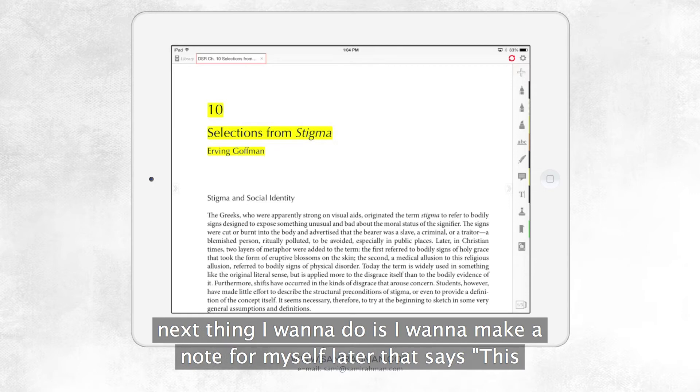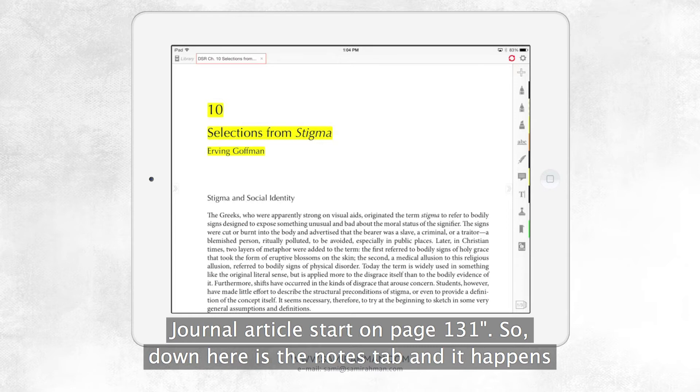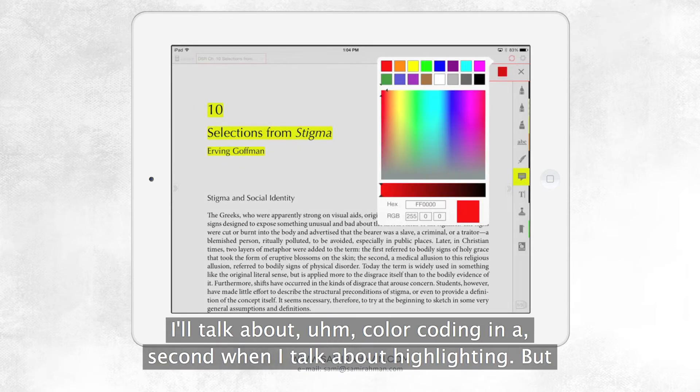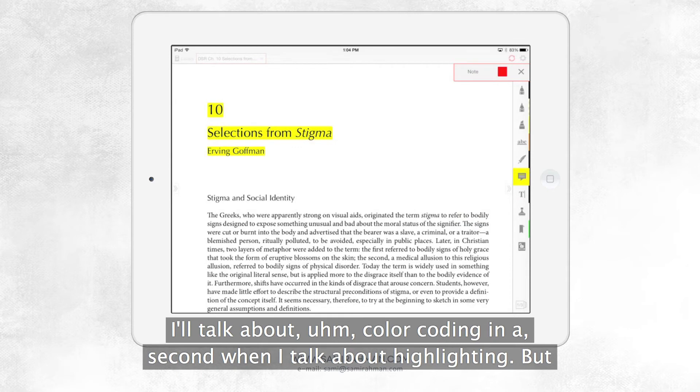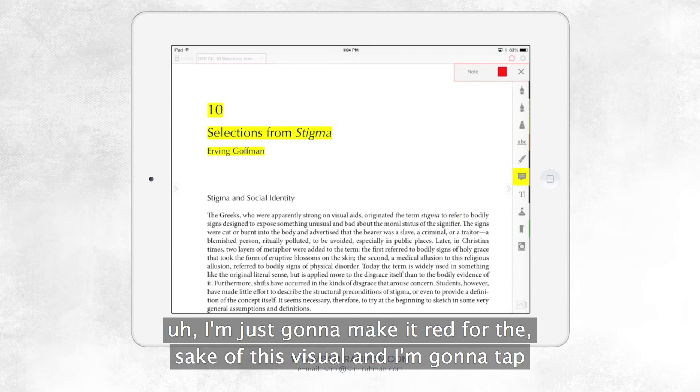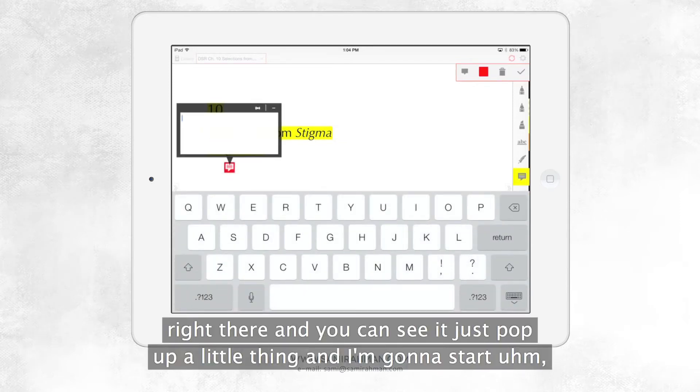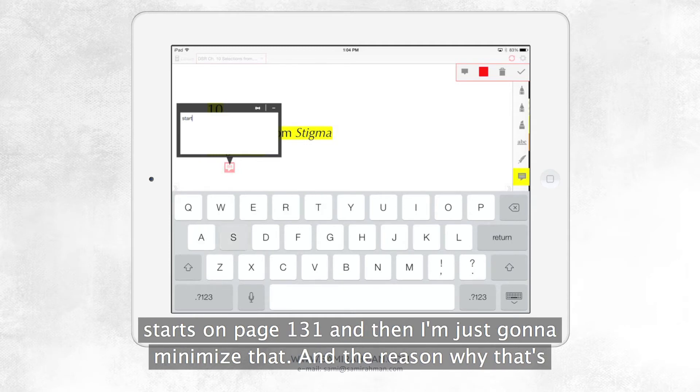And then, the next thing I want to do is I want to make a note for myself later that says this journal article started on page 131. So down here is the notes tab. And it happens to be yellow, but if I tap on here I can make it red. It doesn't really matter. I'll talk about color coding in a second when I talk about highlighting. But I'm just going to make it red for the sake of this visual. And I'm going to tap right between where the article starts and the title. So I'm going to tap right there and you can see it just popped up a little thing. And I'm going to start. Starts on page 131. And I'm just going to minimize that.